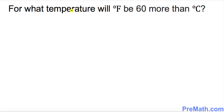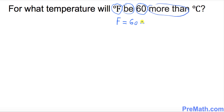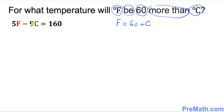We're going to convert this word problem into an algebraic problem. Wherever you see degrees Fahrenheit, just put down F. Wherever you see F is always the same as equal to 60, just put down 60 right up here. Wherever you see 'more than,' that simply means plus, and then this is C. So we got F equal to 60 plus C. Wherever you see F in the formula, replace it by substituting that expression.